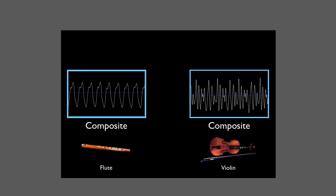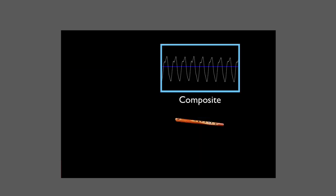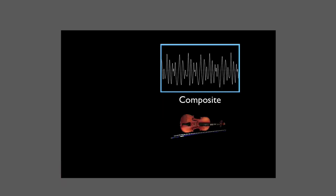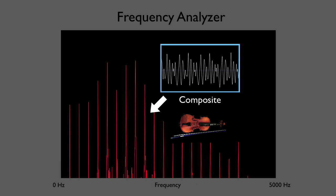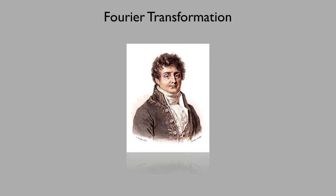Is it possible to do the reverse? That is, start with a composite wave and break it down into its simpler components? Well, that's exactly what the frequency analyzer is doing, and it does so through some fancy math called the Fourier transformation, developed by the Frenchman Jean-Baptiste Joseph Fourier in the early 1800s.